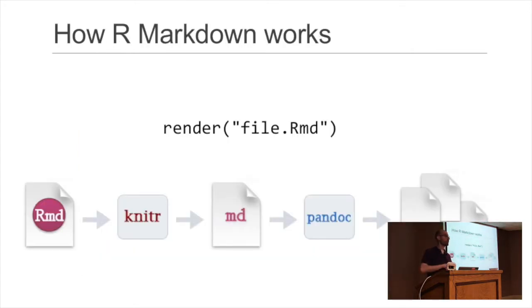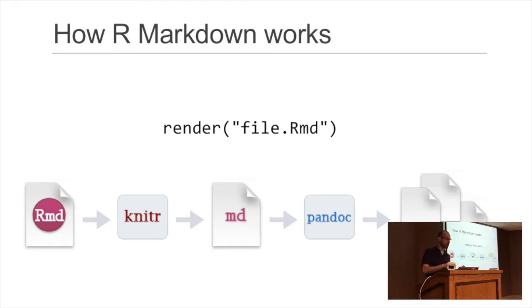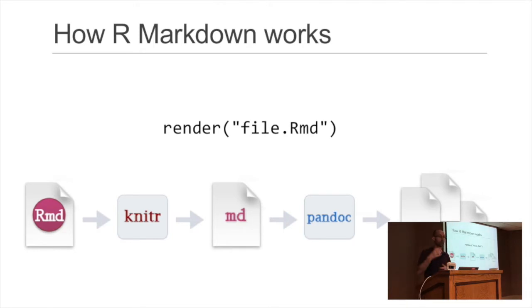As a user you just run the render function from the R Markdown package and give it the name of your file. Under the hood it's a multi-step process: first it processes through the knitr package to run all the code and insert the output, then that Markdown file gets passed through the generic file processor Pandoc, which can convert it to HTML or other formats.